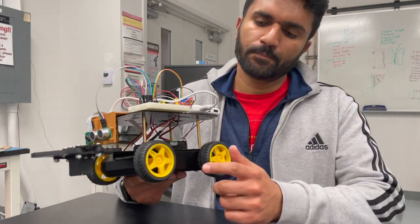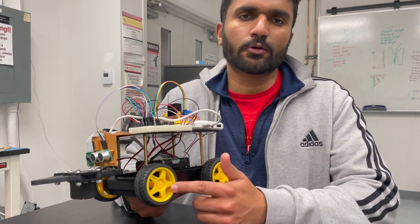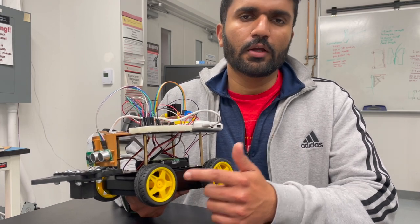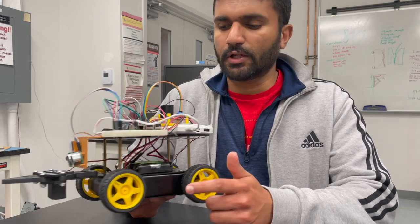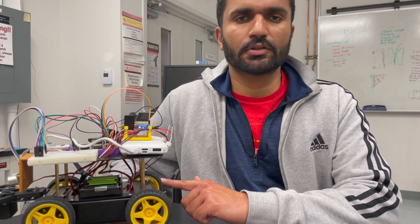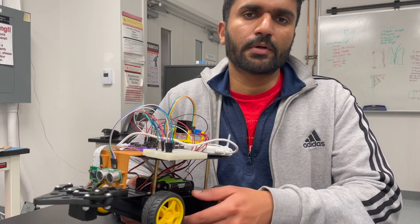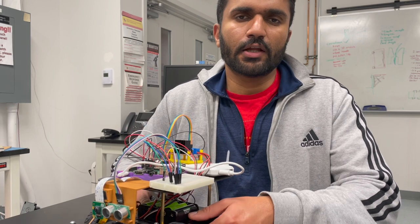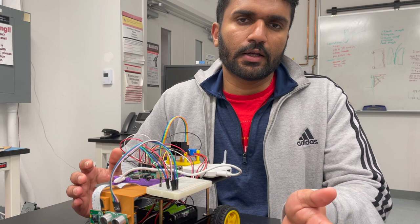As the first step, we rotate the wheel and find the encoder values at which it completes one revolution. We do that for the front left motor as well as the back right motor, where there are encoders attached, and we find the encoder values required to complete one complete revolution.